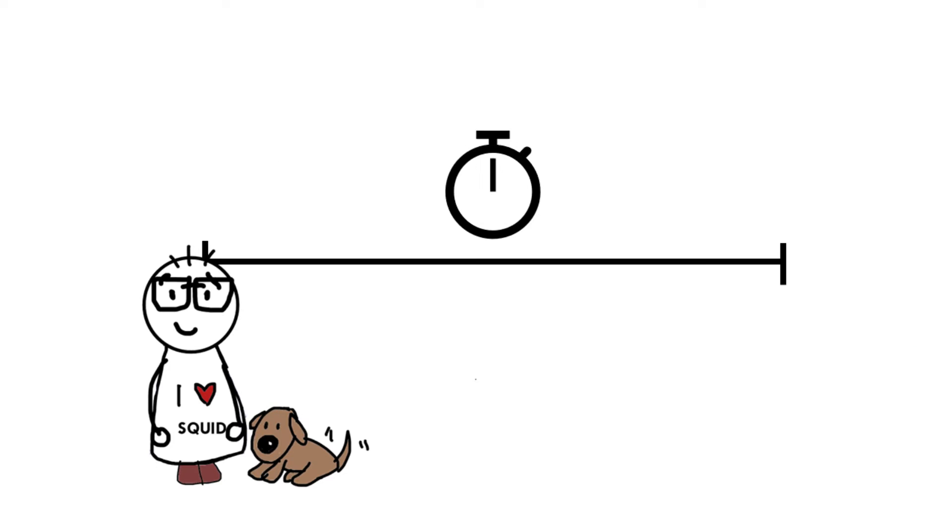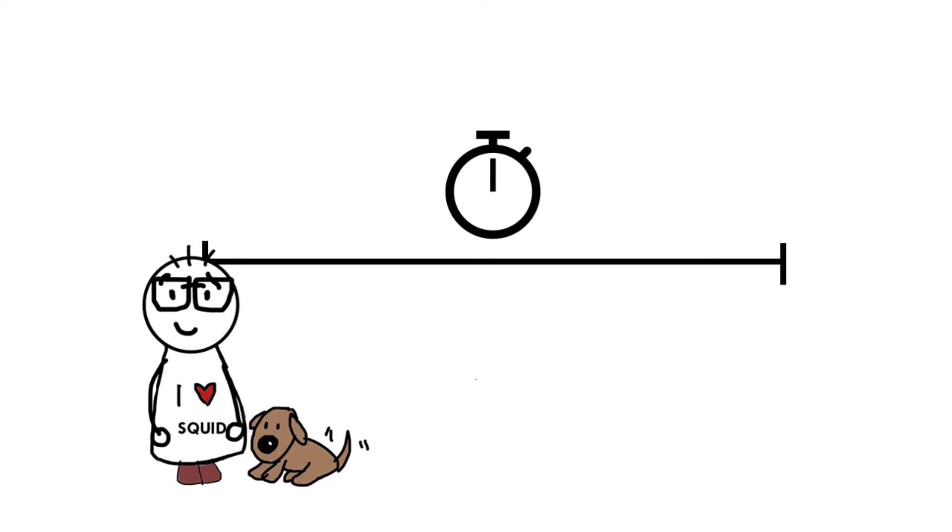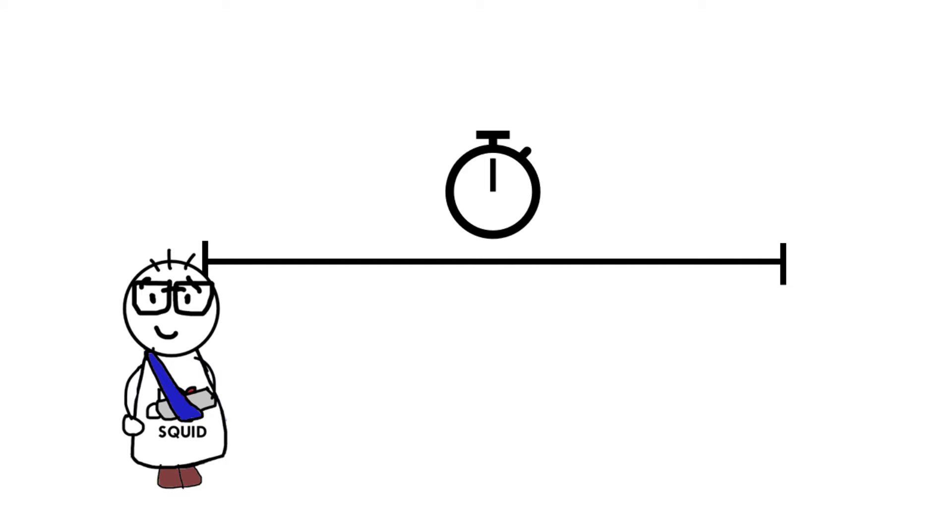You could be looking at time until sneezing if you're allergic to dogs and you pet one, or the time between getting a cast for your broken arm and the moment your cast is removed. So in this case, your start time is the moment you get the cast and the end time, the event, is the moment your cast is removed.